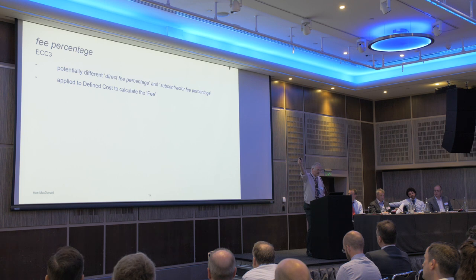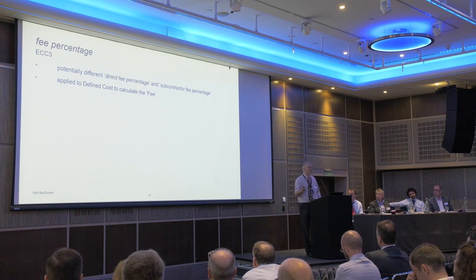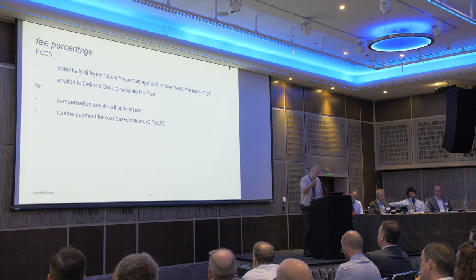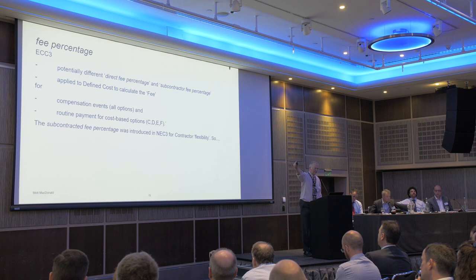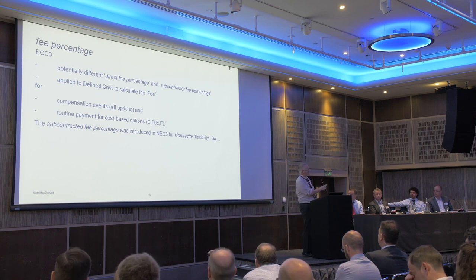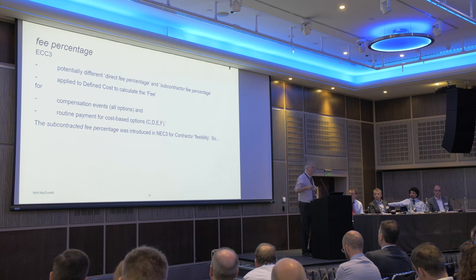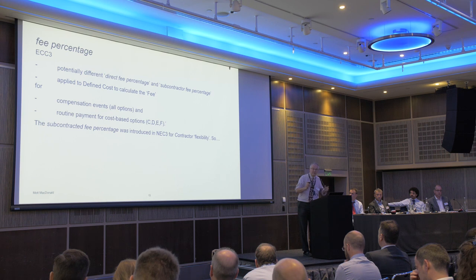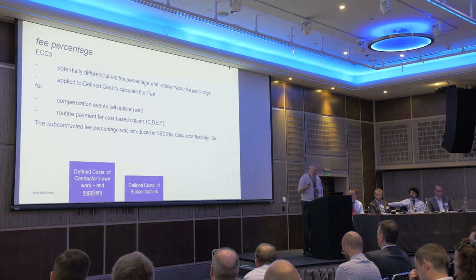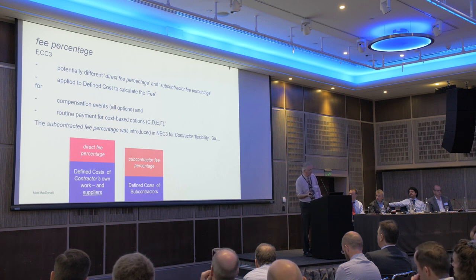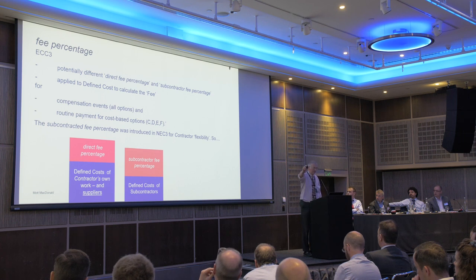In NEC3, it matters whether an entity is a subcontractor or just a supplier because there are two different fee percentages. For ECC3, we use defined cost for all compensation events across all options, and for cost-based options. I was told that when going from NEC2 to NEC3, subcontractors asked for two separate fee percentages — they wanted more flexibility in giving different fee percentages for different types of work. So ECC3 applies two different fee percentages on top of different types of defined cost, whether it's subcontractors or not.